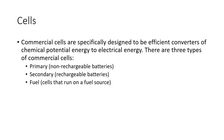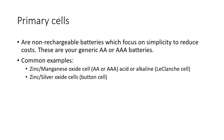Think about it — the battery inside your phone is a secondary cell. Primary cells are non-rechargeable batteries which focus on simplicity to reduce cost. These are the ones you use and throw away — your generic AA or AAA batteries. Examples include zinc-manganese oxide cells, which come in acid or alkaline versions, and zinc-silver oxide cells, which are the button cells you put in watches.